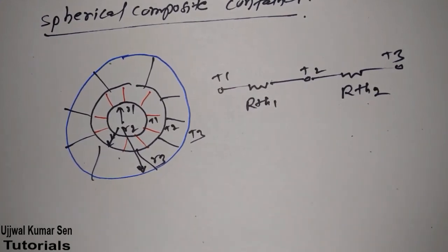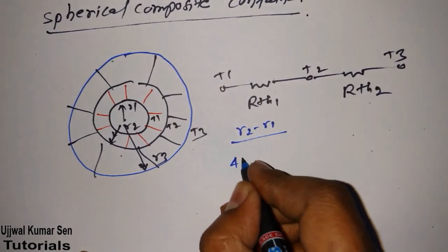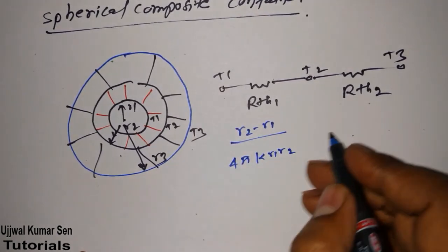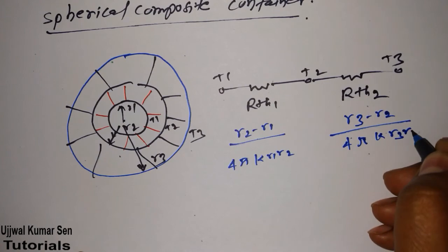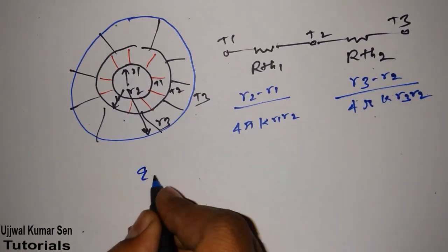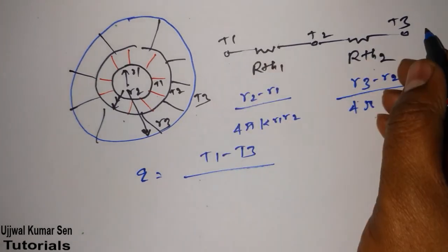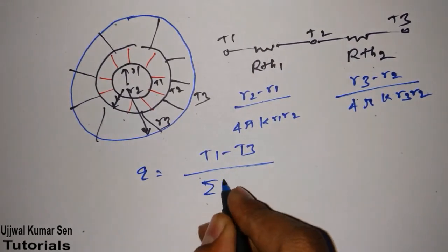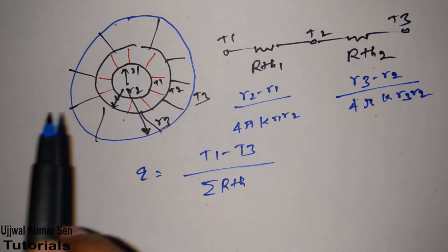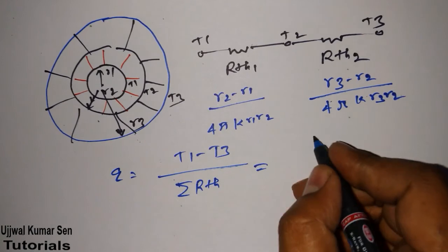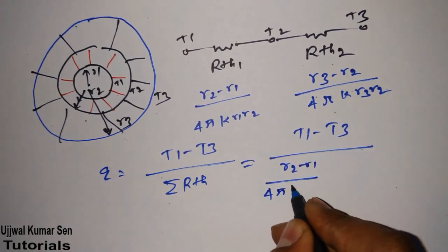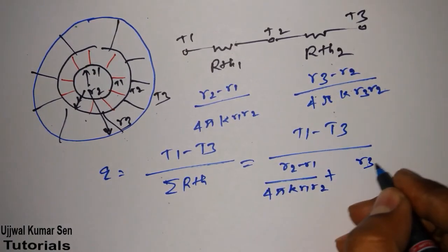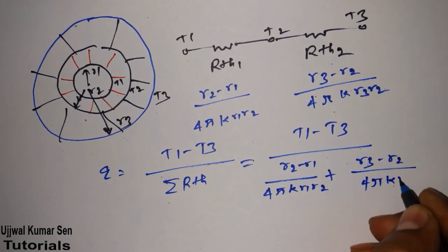If we can find these two thermal resistances, we can easily find the heat conduction. We know that Rth1 equals (r2 minus r1) over (4πk₁ r1 r2) and Rth2 equals (r3 minus r2) over (4πk₂ r2 r3). So q equals (T1 minus T3) divided by the sum of the two thermal resistances.